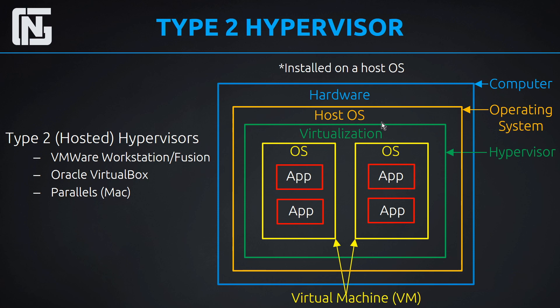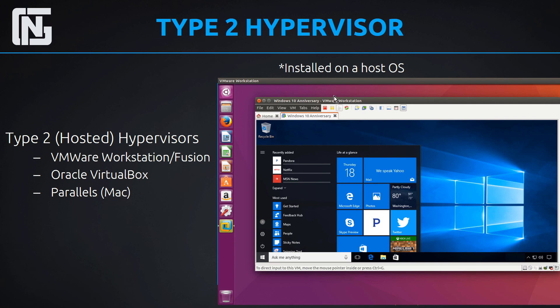Then we install our hypervisor — our virtualization layer — directly underneath the host operating system, and from there we create our virtual machines. A couple of other type 2 hypervisors are Oracle's VirtualBox — which runs on Linux, Mac, and Windows — and Parallels, which is just for Mac. Here is an example of VMware Workstation installed on Ubuntu and running a Windows machine inside of it. That should give you the idea: we're running a virtual desktop inside of an existing computer.